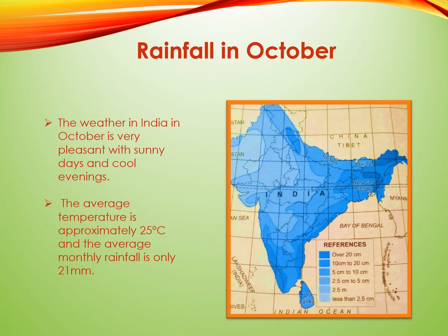October is a month of transition from the rainy season to the cool season. Because of this, October's weather is very pleasant with sunny days and cool evenings. The average temperature is approximately 25°C and the average monthly rainfall is only 21 mm. This cool and comfortable weather allows travelers to participate in outdoor activities such as hiking and sightseeing. The number of tourists visiting India in October starts to grow, but hotels and flights are still quite easy to book.